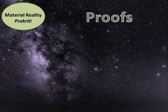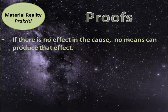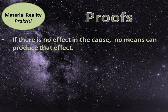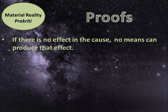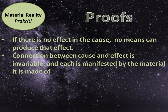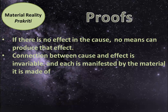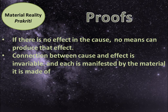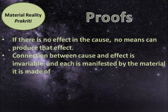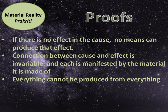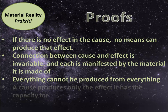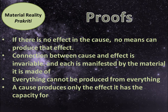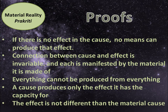The proofs given for material reality are: if there is no effect in the cause, no means can produce that effect. Connection between cause and effect is invariable, and each is manifested by the material it is made of. Everything cannot be produced from everything — a cause produces only the effect it has the capacity for. The effect is not different than the material cause.